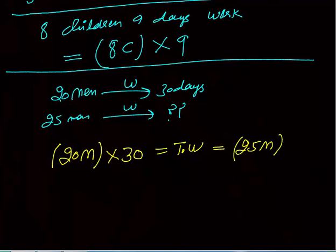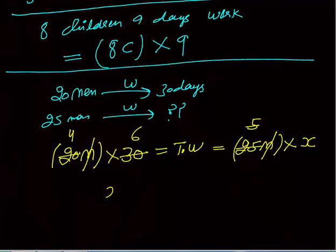Let's assume they complete the work in x days. We need to calculate x. The m's cancel, so twenty into thirty equals twenty-five into x. Solving: x equals twenty into thirty divided by twenty-five — that is twenty-four. So twenty-five men will take twenty-four days to complete the work.